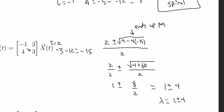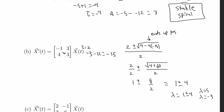So lambda equals one plus or minus four. This means we have a positive eigenvalue lambda equals five and a negative eigenvalue lambda equals negative three. This results in a saddle.